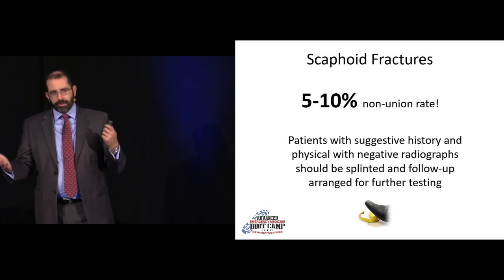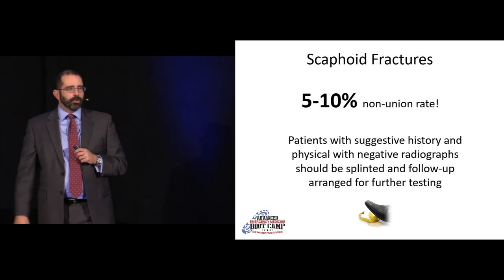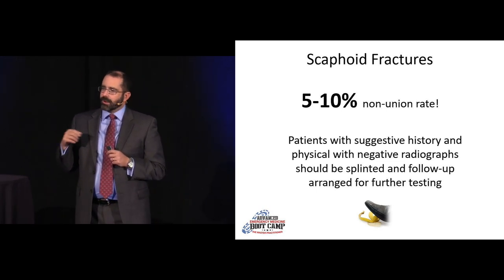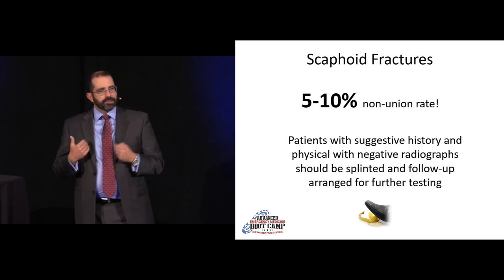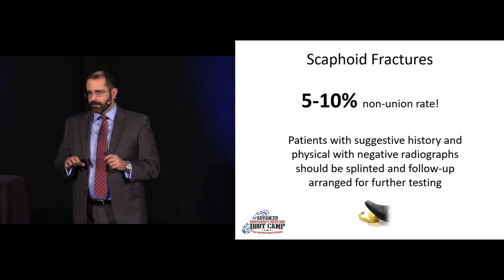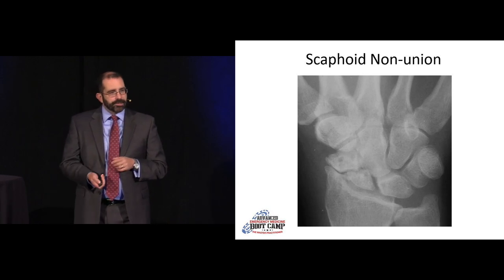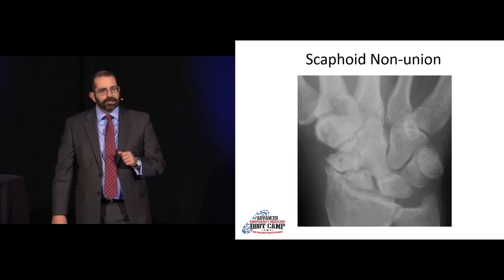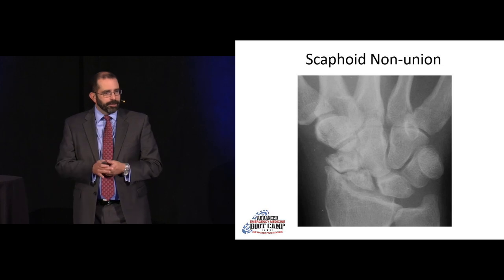If the blood supply is disrupted, that proximal piece dies, causing vastly accelerated osteoarthritis and chronic pain. End-stage treatment can be a proximal carpectomy — carving out the entire proximal carpal row — with major effects on mobility. These are high-risk injuries and a significant source of litigation when missed. Negative radiographs do not rule it out. If they're tender in the snuff box, splint them and get prompt follow-up. Here's what it looks like when missed: a sclerotic, shrunken proximal fragment with bad osteophyte formation.